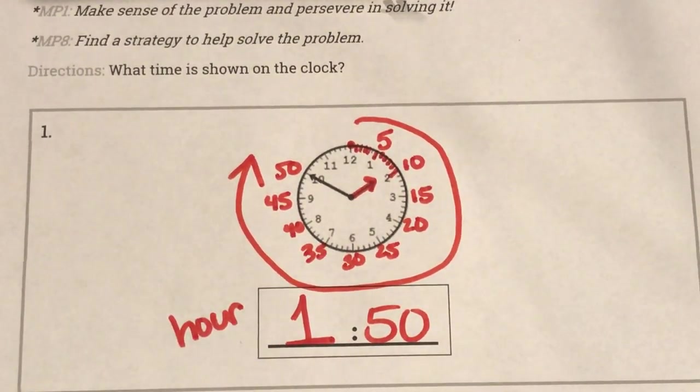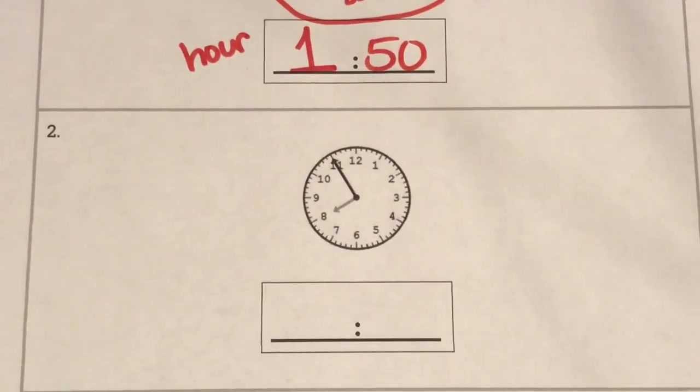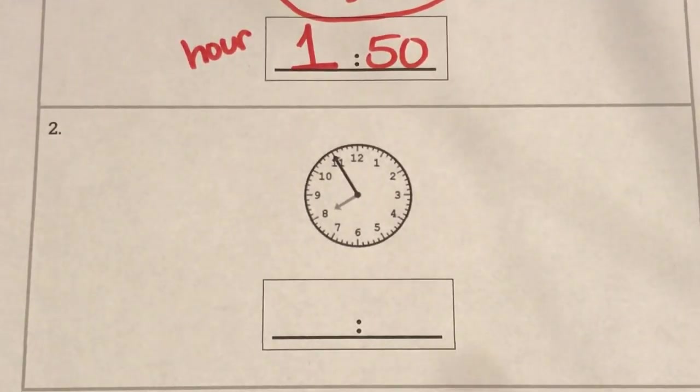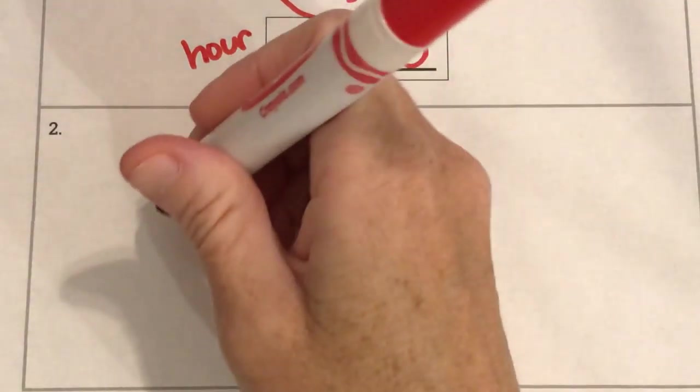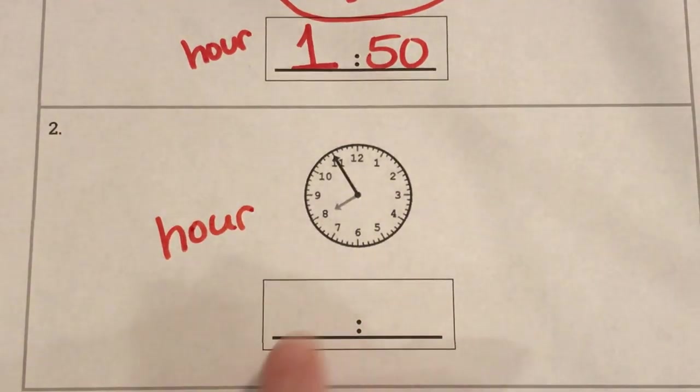Okay let's look at another one boys and girls. Okay, so what do I look for first is I always look for my hour hand first. My hour hand first because I'm gonna write that first.